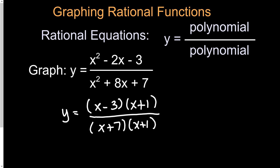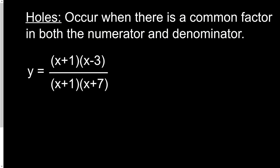The first thing we're going to look at is called a hole in the graph. A hole occurs when there's a common factor in both the numerator and denominator. So the x plus 1 factors will essentially cancel out, and when those cancel out, that creates a hole in the graph. The hole is at whatever value makes the top and bottom 0 at the same time.